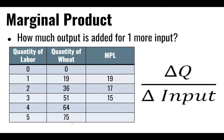The concept of marginal product is looking at how much total product changes when we add one more input. For example, if I go from zero workers to one, I could go from zero bushels of wheat to 19 — so that first worker's marginal product of labor is 19 bushels. If I go from one worker to two, total bushels go from 19 to 36. The first person produced 19, which means the second person's contribution is 17 — that's the change in wheat divided by the change in labor.